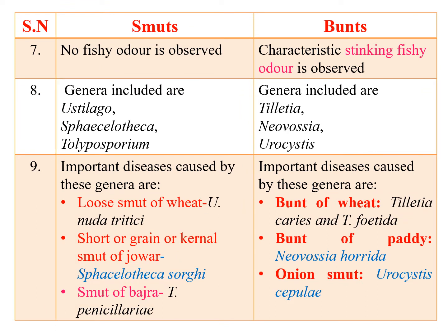No fishy odor is observed in the case of smut fungi, but in bunt fungi a characteristic stinking fishy odor is observed. The important genera in smut fungi are Ustilago, Sphacelotheca, and Tolyposporium. In bunt fungi, the important genera are Tilletia, Neovossia, and Urocystis.